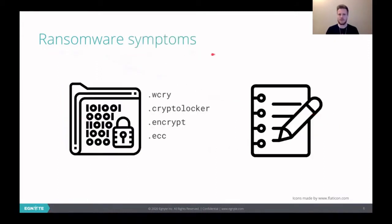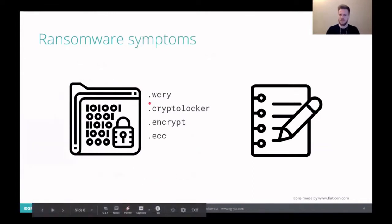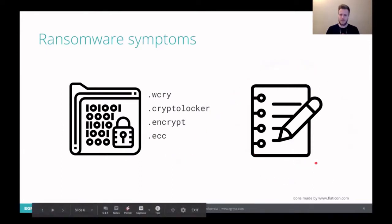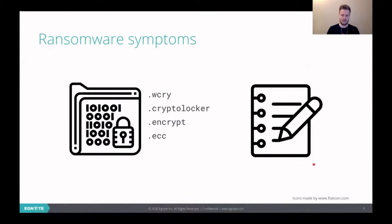There are some symptoms of ransomware. First, there are encrypted files with usually changed extensions. There are some examples of known ransomware extensions. You should definitely be worried if you see those extensions on your machine. And the other thing is the ransom note which is basically an instruction how to pay the ransom to the attacker and it's placed in the text file.